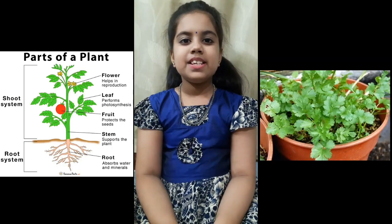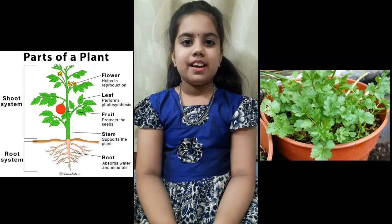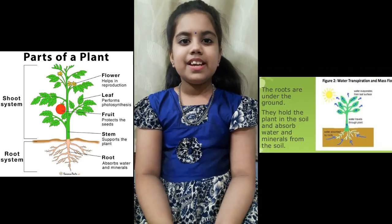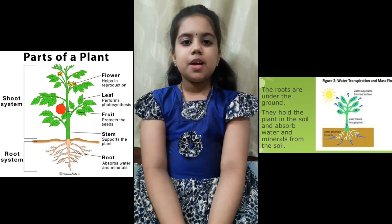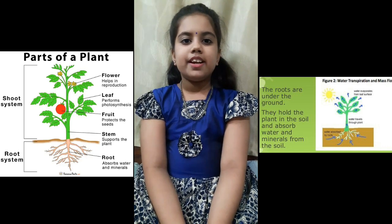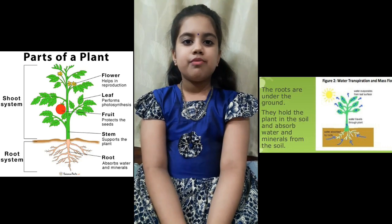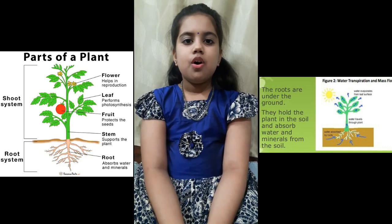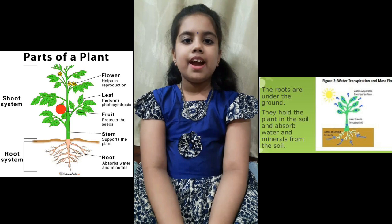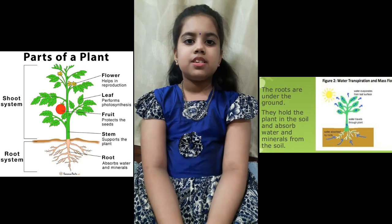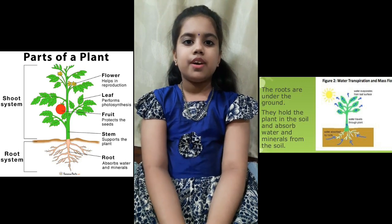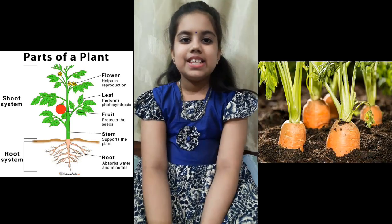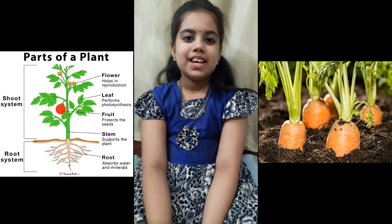An example is coriander. Next one is roots. Roots absorb water and minerals from the soil and hold the plant so it does not fall over. An example is carrot.